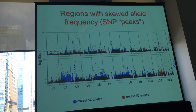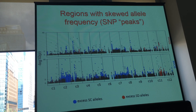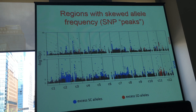Here we have the results. On the x-axis we have the 12 chromosomes in copepods. This is a Manhattan plot, so on the y-axis it's a negative log10 of the p-value. Each dot is a SNP — if you're high on the y-axis it means allele frequencies are skewed away from the 50-50 ratio in all three replicates. The higher you are, the more skewed. Blue dots indicate an excess of Santa Cruz alleles, red dots an excess of San Diego alleles. The unit we consider is not the SNP itself but groups of SNPs that form peaks. In both reciprocal crosses — the top being the San Diego mitochondria and the bottom the Santa Cruz mitochondria — there are many more blue dots.